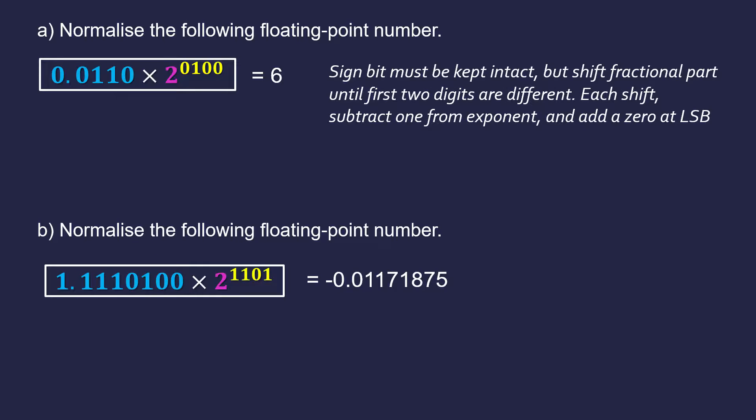So I need to do the following to normalise it. First of all I must leave my sign bit intact, I can't change that 0 to a 1, I've got to be really careful to keep it intact, but I'm looking to perform a shift until I end up with the first two digits being different, so I want it to be normalised. So really I'm looking for where is the first case, moving left to right, I've got a 0 followed by a 1, so really the first instance is here.